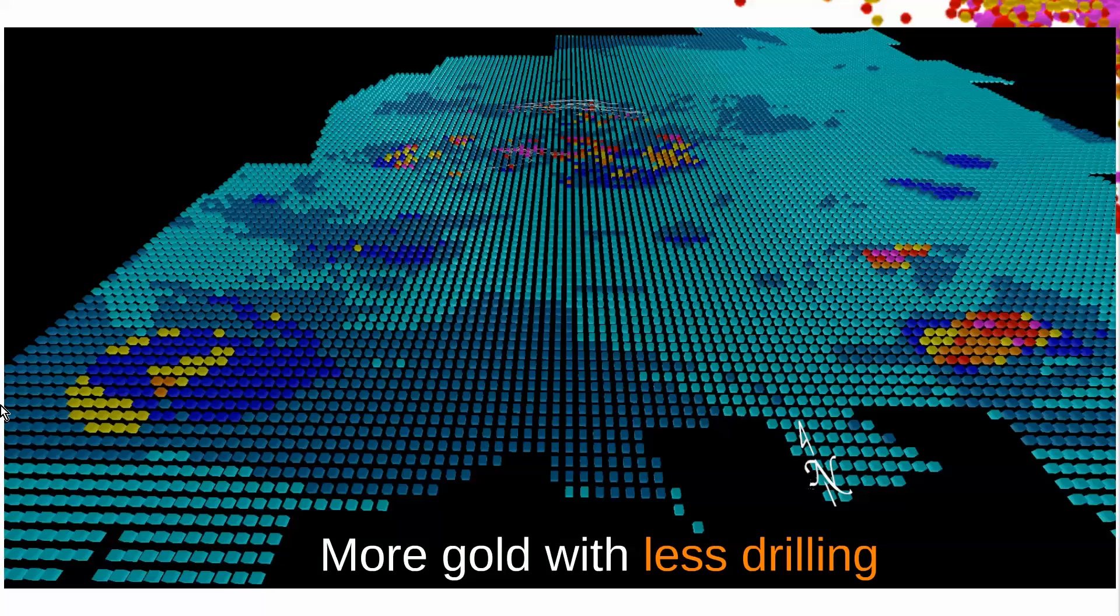The SGS Geostat strategy distills all the data into a basic score. The hotter the color, the higher the probability of hitting gold. We only see a single slice here.